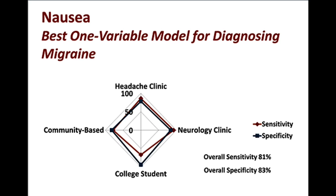Remembering those figures — 0.81 and 0.75 — leads to something very interesting when one looks for the single best one-variable model for diagnosing migraine. Vince Martin studied this in a variety of clinics and settings and found that nausea by itself, in a stable pattern of episodic headache, had an overall sensitivity of 81% and specificity of 83%. So simply having a patient with episodic, recurrent, stable headaches and associated nausea may be just as good as any other way of making a diagnosis of migraine.